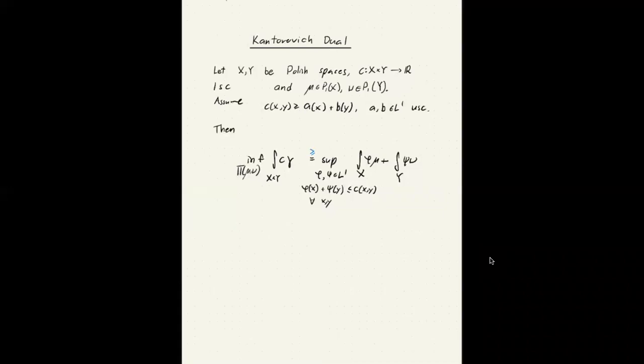I'm going to prove this side of the two inequalities. So if we just pick one transport plan here and we also pick two functions phi and psi satisfying precisely the conditions up here. So in particular, we want phi of x plus psi of y to be less than or equal to c of x comma y for all x and y.